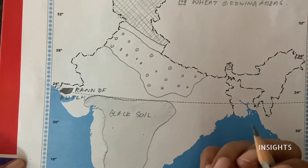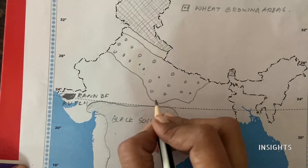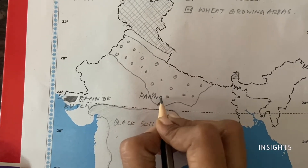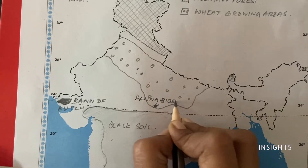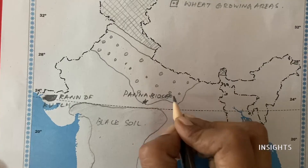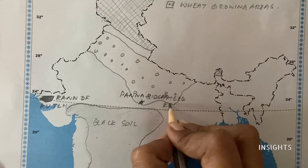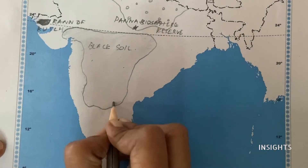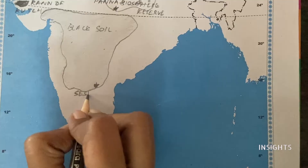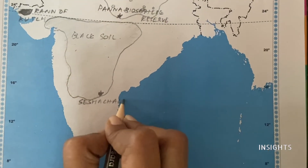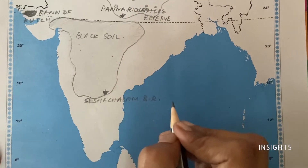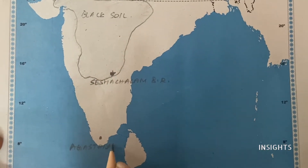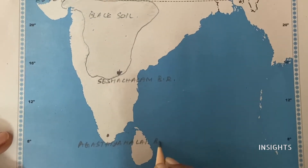Then, in the last map I think we did southwest monsoon, so here we'll do northeast monsoon. But before that, let us mark some individual places — some biosphere reserves. First is Panna Biosphere Reserve. Then two more: Seshachalam Biosphere Reserve — I'm just writing BER as short form. Last is Agasthyamalai, again writing BER.